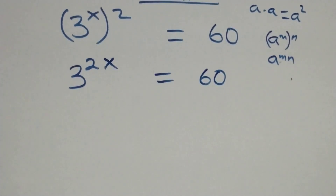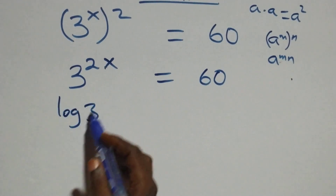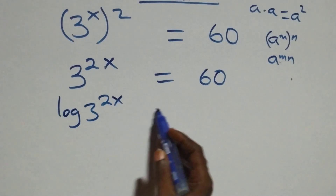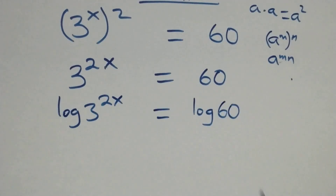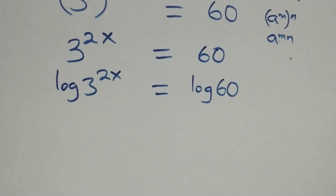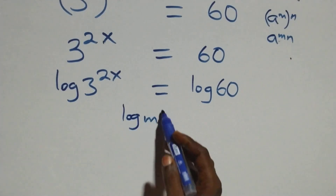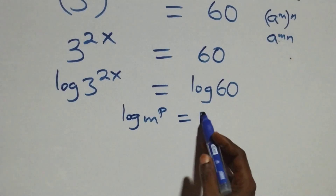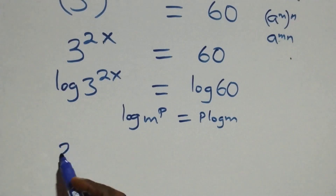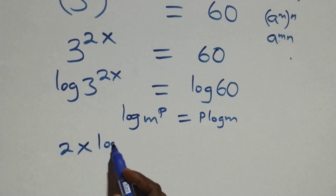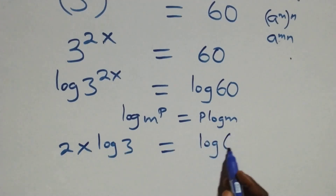The next step: we take the log on both sides, so log of three raised to power two x equals log sixty. We then apply the power law of logarithms: log of m raised to power p equals p times log m. The power two x comes down and this becomes two x times log three equals log sixty.